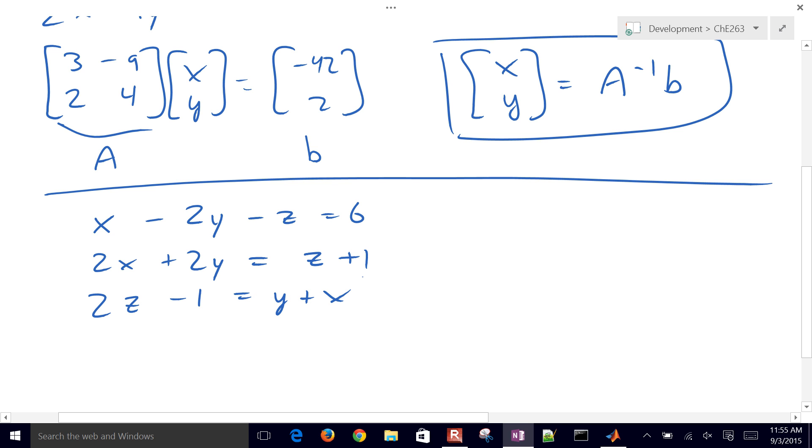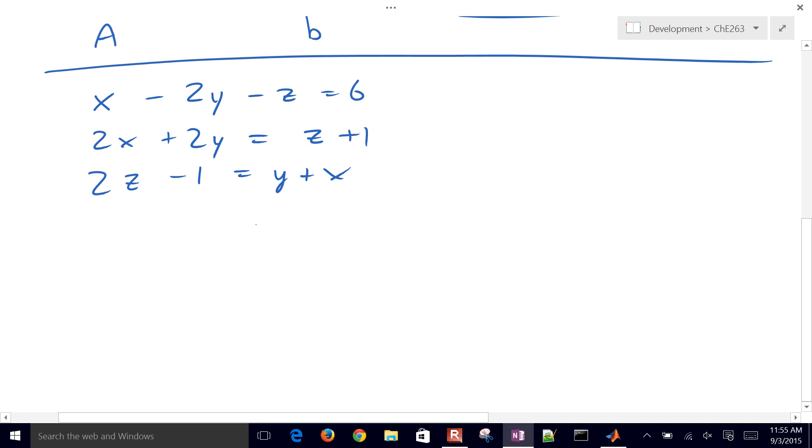So the first thing that we'll need to do is just put this into matrix form so that we can solve it in MATLAB. And we'll have our matrix coefficients here and then the right-hand side here. So any variables, we'll just go ahead and move those to the left-hand side. And any constants, we'll move those to the right-hand side. So if we put this into matrix form, we have 1 here, so that's 1 times X, negative 2 times Y, negative 1 times Z, and then 6 is on the right-hand side.